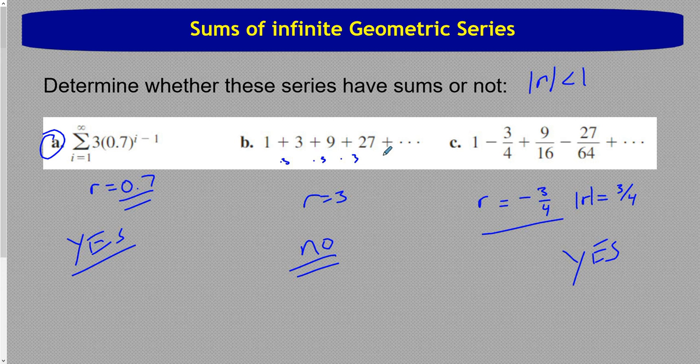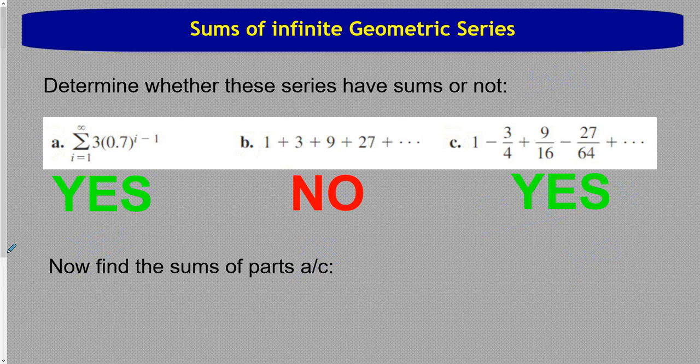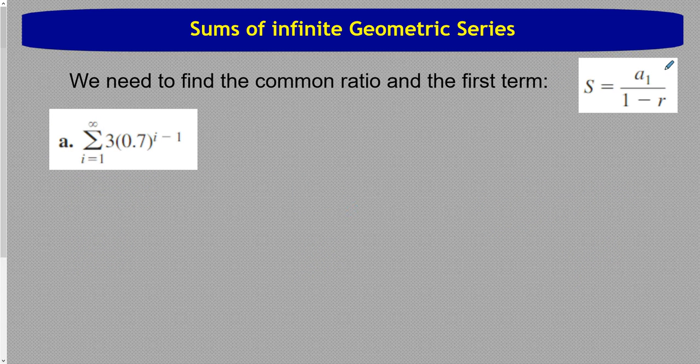So a and c will have sums. B will not. Now let's do that. We are going to find the sums for part a and part c. We are going to need that formula again. So here it is in the top right.